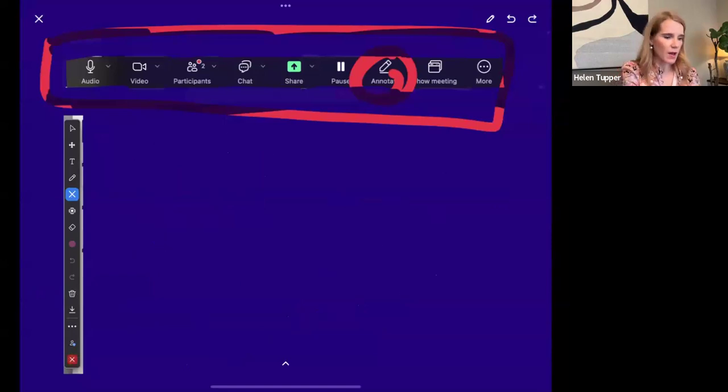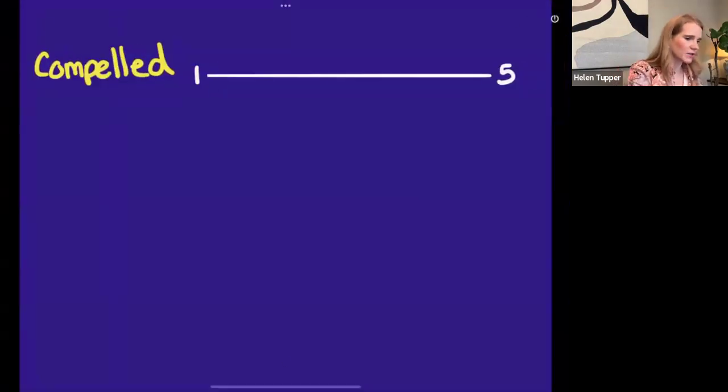Statement number one is: I work because there is a part inside of me that feels compelled to work. So five would be yes, that is me, I feel compelled to work. One would be no, I don't feel compelled to work. So go with that one first.